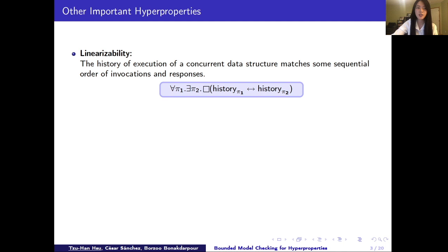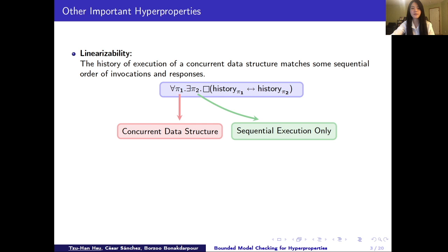It can be expressed in a for all exists hyperLTL formula as you see here but in order to capture this requirement we also allowed each quantifier to range over different models, that is the history of all executions on a concurrent data structure must always match with some sequential order of invocation and responses from a model that only allows sequential execution. This is one of the cases we investigate in our case study section and by using this technique of quantifying different models we are able to find the linearizability bug in a complicated concurrent data structure.